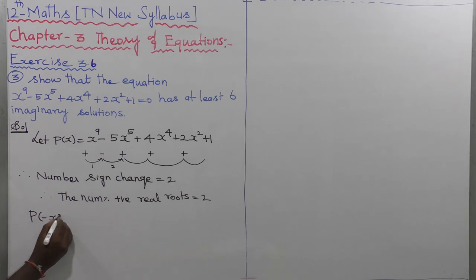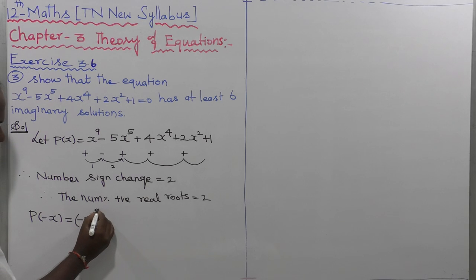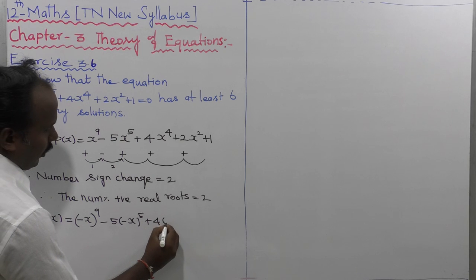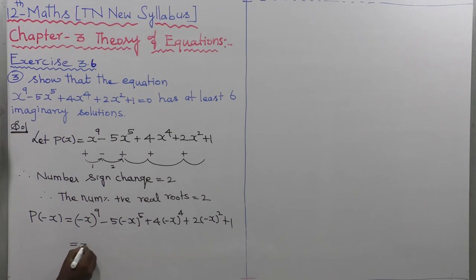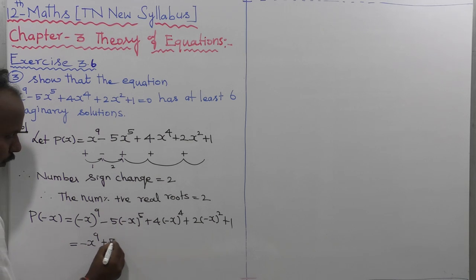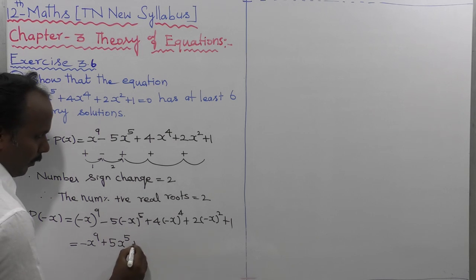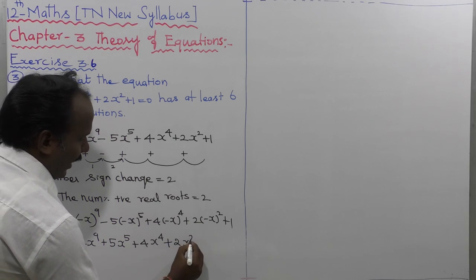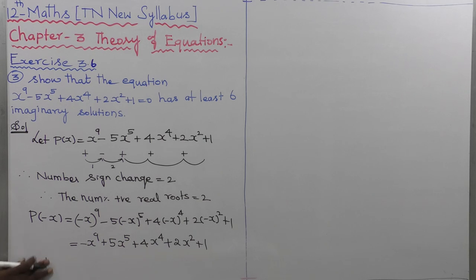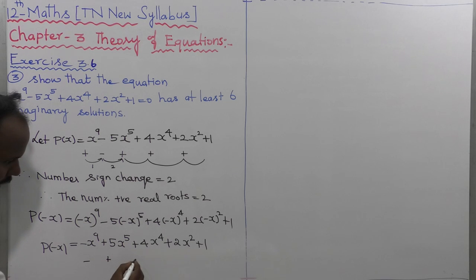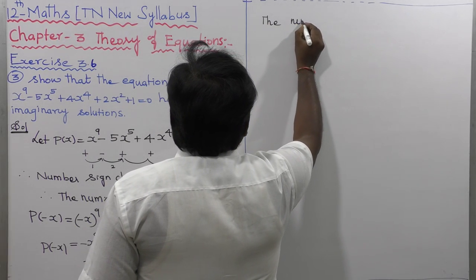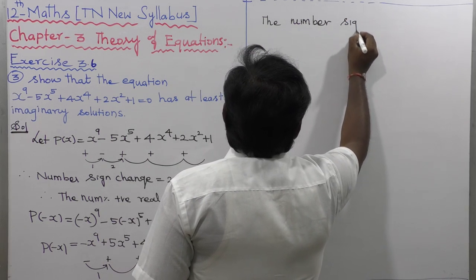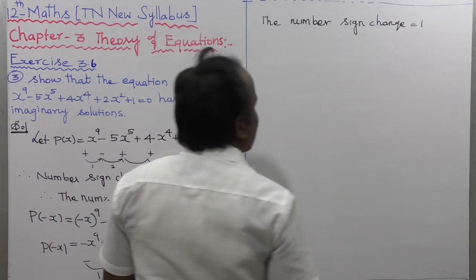Next, to find P(-x): P(-x) = (-x)⁹ - 5(-x)⁵ + 4(-x)⁴ + 2(-x)² + 1. Since odd powers of (-x) are negative and even powers are positive, this simplifies to -x⁹ + 5x⁵ + 4x⁴ + 2x² + 1. The number of sign changes in P(-x) is equal to 1.